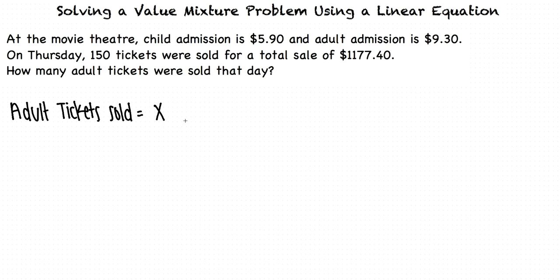Now, since we know that the total number of tickets sold was 150, how would we represent the number of child tickets sold? Well, if the total number of tickets sold is 150 and the number of adult tickets sold is x, then the number of child tickets sold would be 150 minus x. Great job.